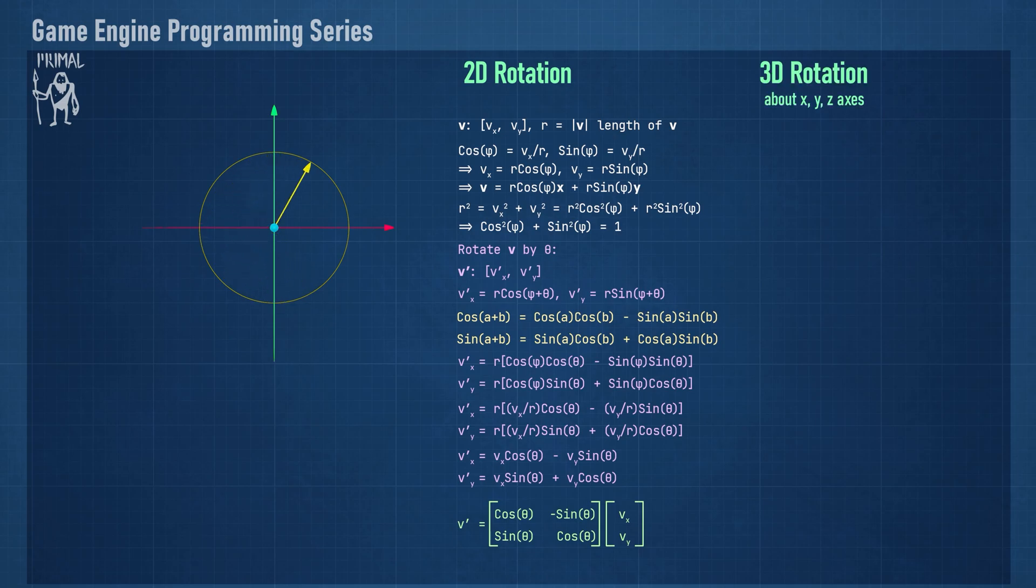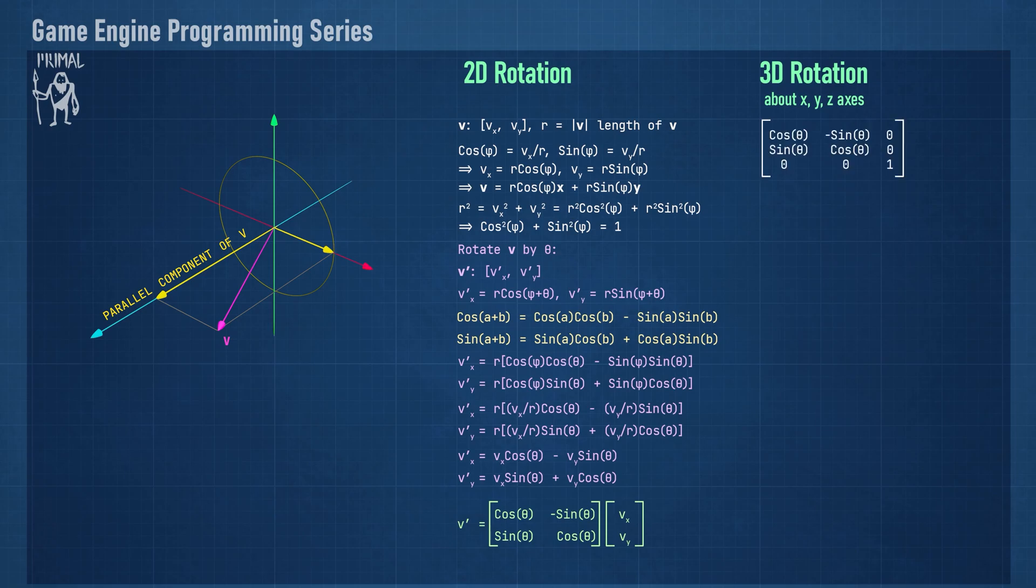Going to three dimensions, you can see that only the vector components on the plane of rotation are affected. The component that's parallel to the axis of rotation and therefore perpendicular to the plane of rotation remains the same. So it's rather easy to expand this matrix for three-dimensional rotations. We simply add an extra row and column with zeros and a one that will copy over the component that's not affected. This particular matrix is the rotation matrix about the z-axis.